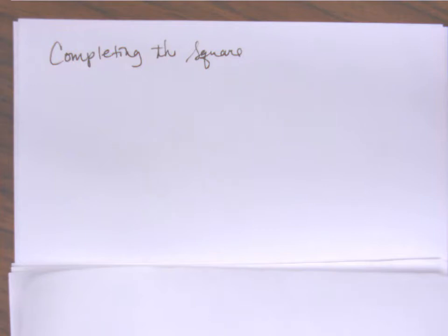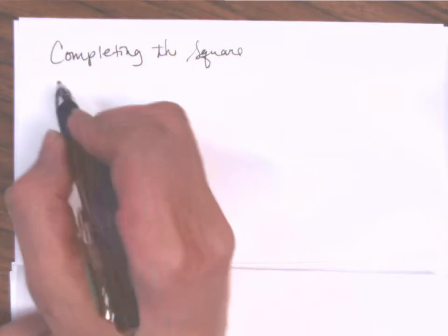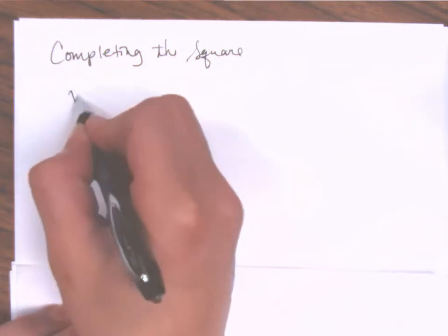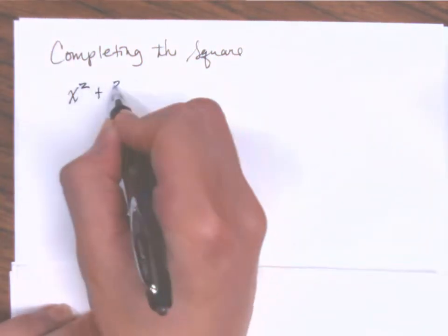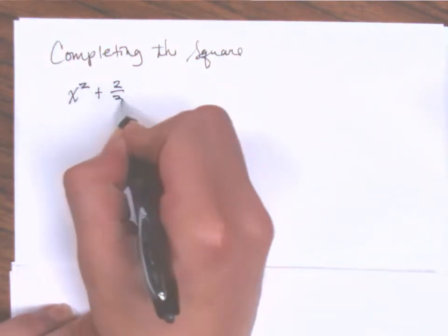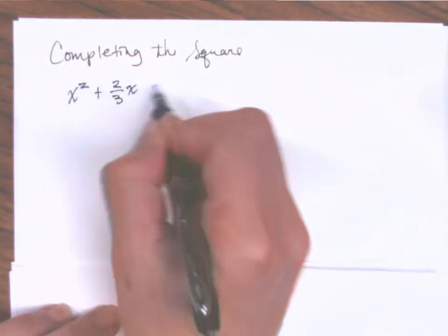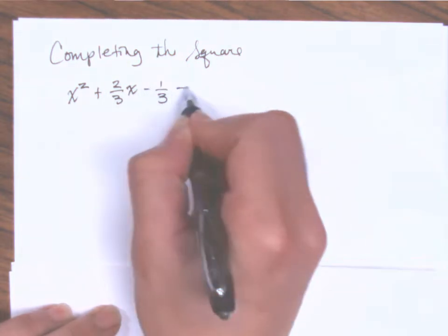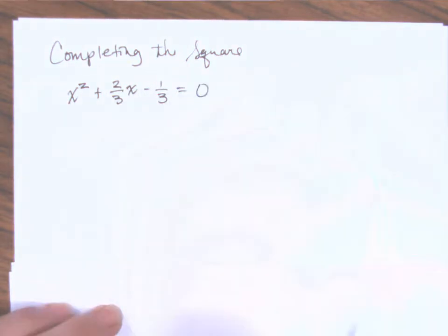Now we're going to look at an example of completing the square, but this time our equation is going to have fractions involved in it. So let's say we're given the equation x squared plus two-thirds x minus one-third equals zero.